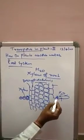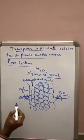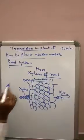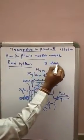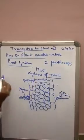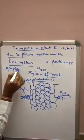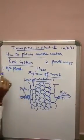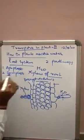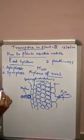After absorption of water by the root hair, this water will reach the xylem mainly by two pathways. These pathways are: first, the apoplast pathway, and second, the symplast pathway. These two terms were coined by Ernst Munch, a German biologist.